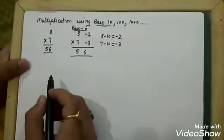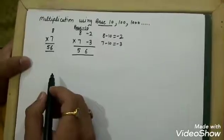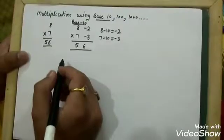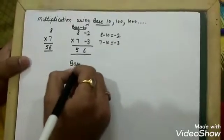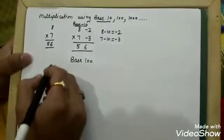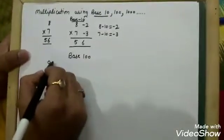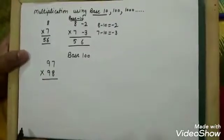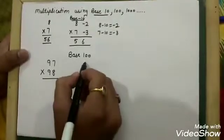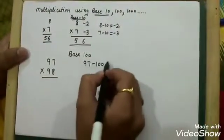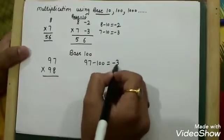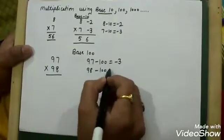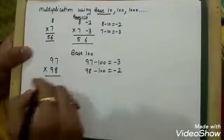This method will be very useful when we use base 100, because from 8 to 10 we can just learn the tables, but with base 100 let's take a calculation where we need to multiply 97 with 98. Let's try to solve it using base 100. 97 minus 100 gives us minus 3, and 98 minus 100 gives us minus 2.